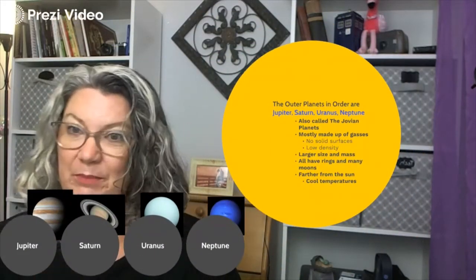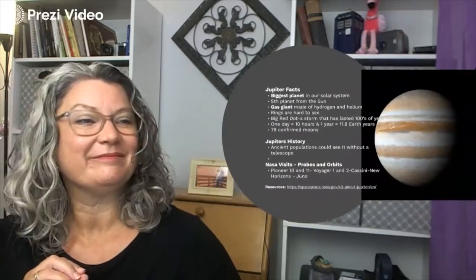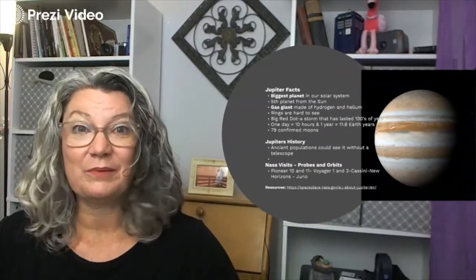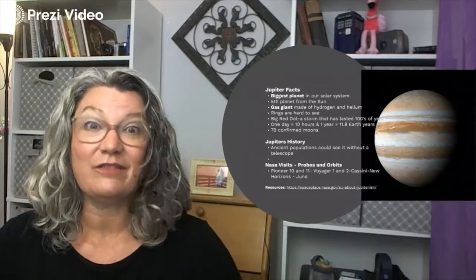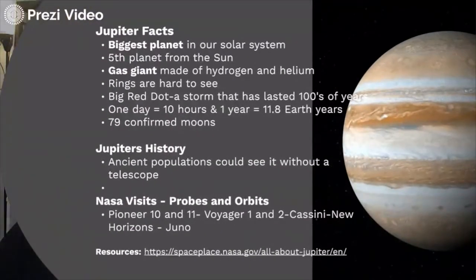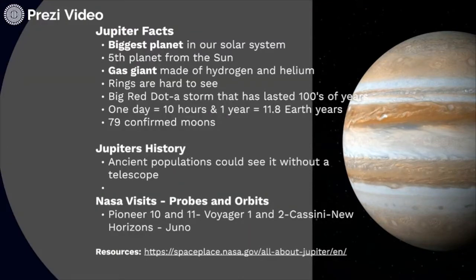Now we're going to dive a little bit deeper. Let's take a look at Jupiter. Jupiter is a beautiful planet — it has all those rings, you can see all the stripes on the planet, so it's very visible and you can always recognize it easily. Jupiter is the biggest planet in our solar system. It's the fifth planet from the sun. It's a gas giant, meaning it's made up mostly of gases — in this case, hydrogen and helium. It does have rings, but they're hard to see. You may have noticed a big red dot in a lot of the photos of Jupiter — that dot is a storm that has lasted hundreds of years. The entire surface of Jupiter is very stormy.